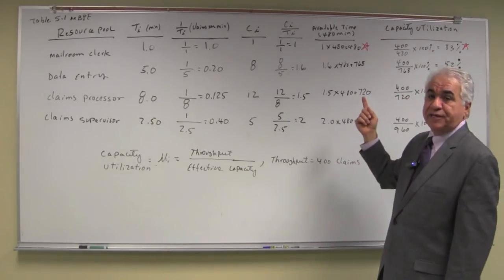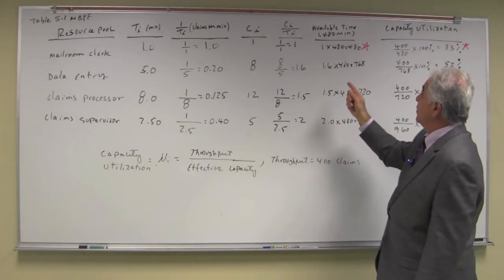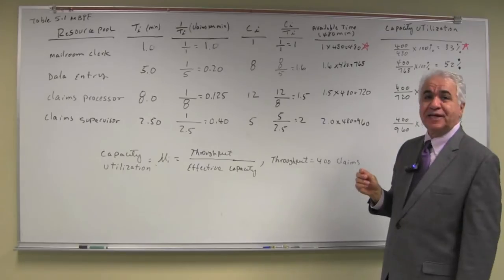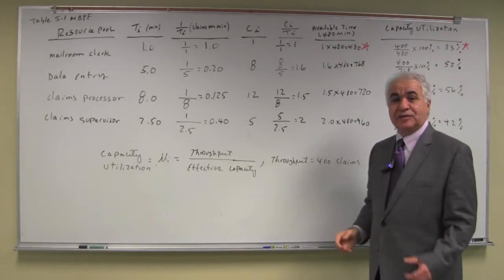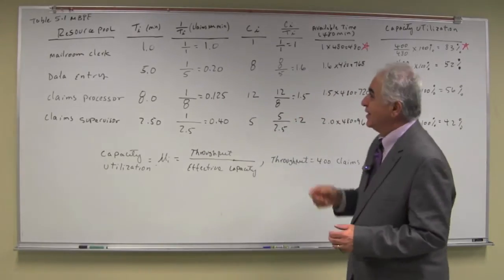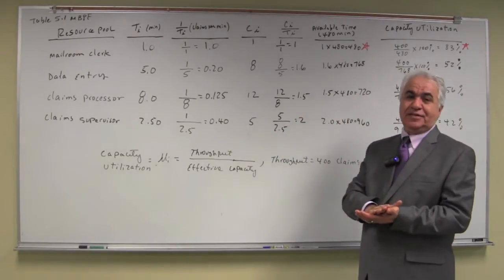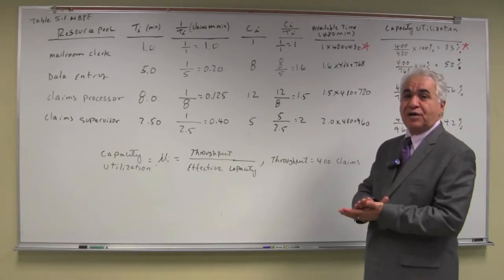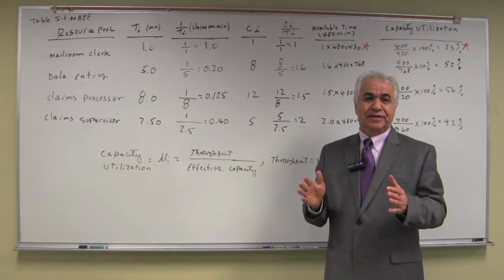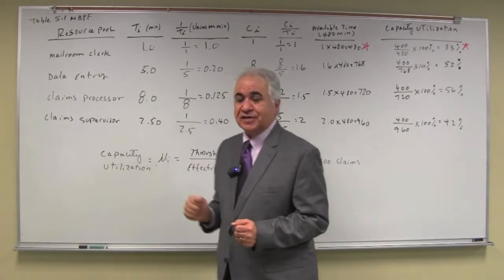One observation here is that the mayor and clerk has the lowest or the smallest capacity, 480 claims per day. So we consider that to be the bottleneck of the process. Hence the effective capacity of a process is the same as the effective capacity of your bottleneck step. In this case it's the main room clerk.